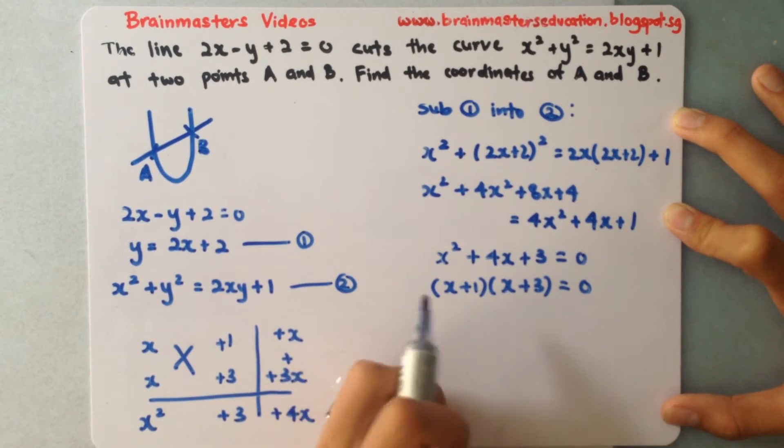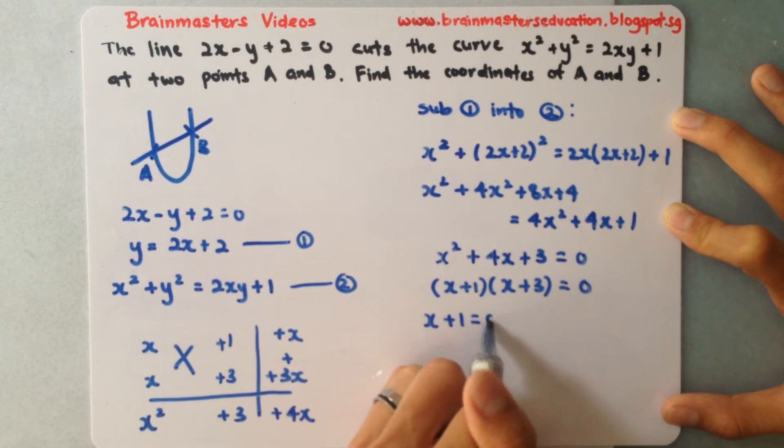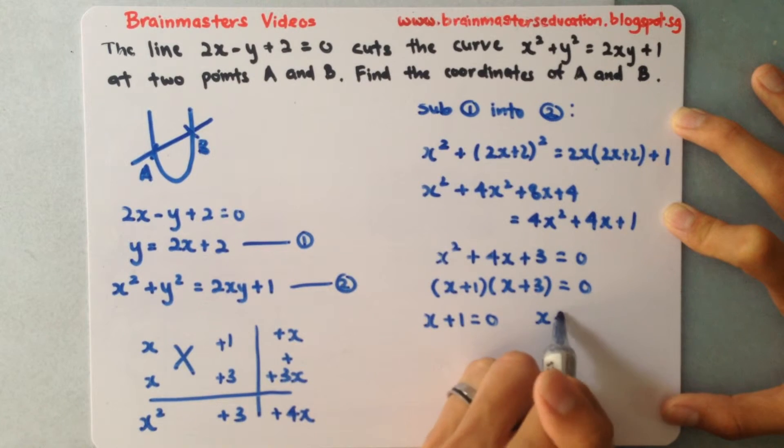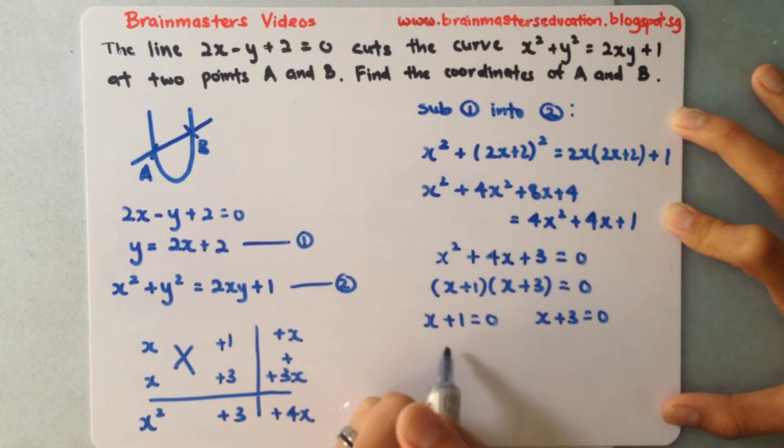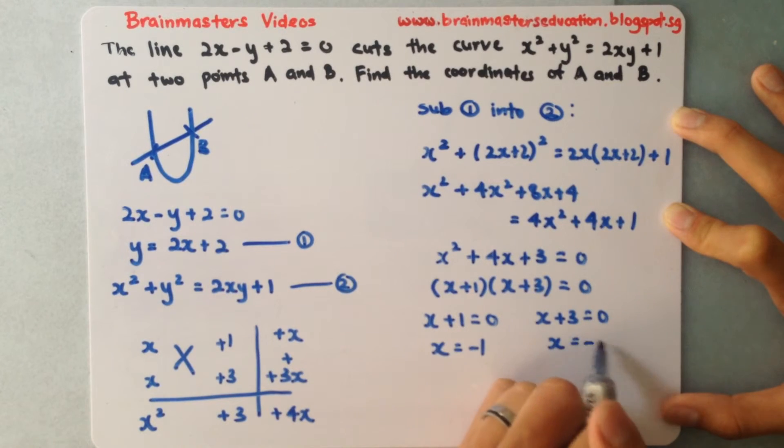Okay so to find out what's my x coordinate, they will each be equals to 0. So x plus 1 equals to 0, and x plus 3 equals to 0. So over here I'll have x equals to negative 1, x equals to negative 3.